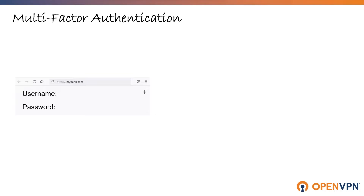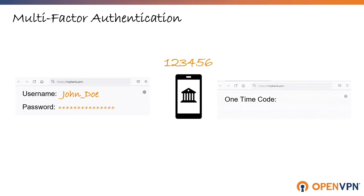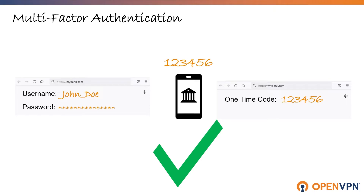First and most typically, you'll type in your username and password. Then, as a second factor, you'll either use an authenticator app which will generate a one-time code, or a PIN code is texted to your cell phone that you enter on the next screen, and you can gain access to your account.